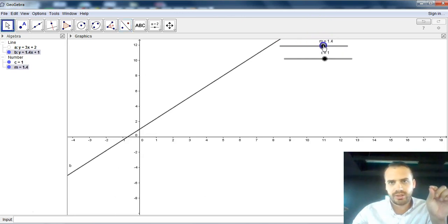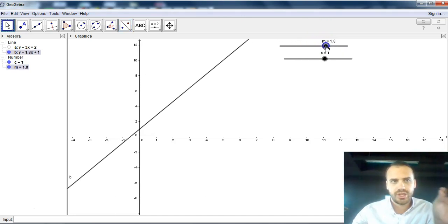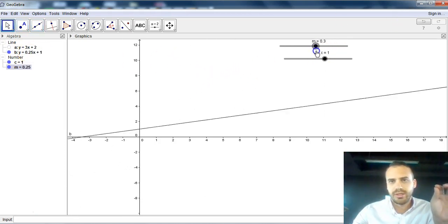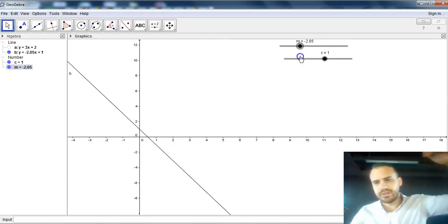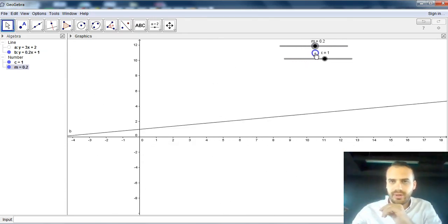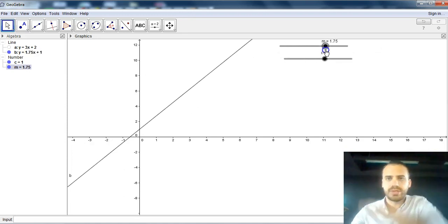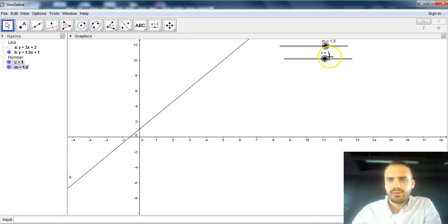Now, watch this function here. As I change the m value, the function changes, both the equation here, but also the steepness of this line. So m controls the gradient. If m's negative, it slopes downwards. If m is positive, it slopes upwards.